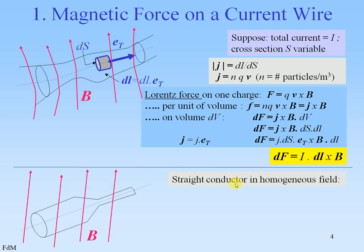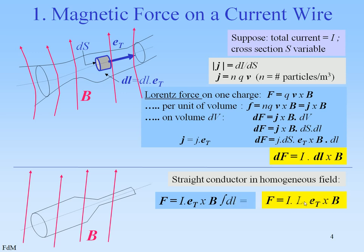Suppose we have a straight conductor in a homogeneous field, then the force has to be integrated over the line, and that leads to the well-known relation of the Lorentz force on a current line as the product of the current, the length and the magnetic field. The direction is given by this factorial product. It is seen that F is perpendicular to ET and to B, and thus in this case F will be pointing perpendicular to the plane of drawing.